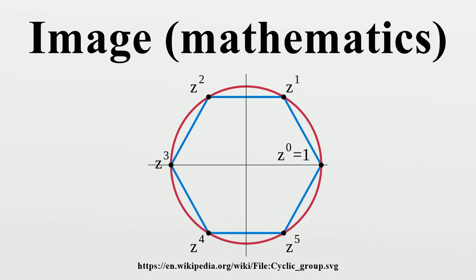For example, for the function f(x) = x^2, the inverse image of 4 would be {-2, 2}. Again, if there is no risk of confusion,